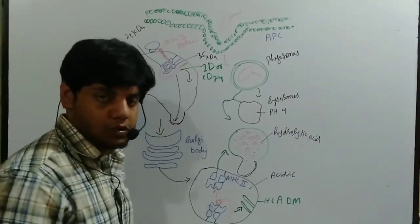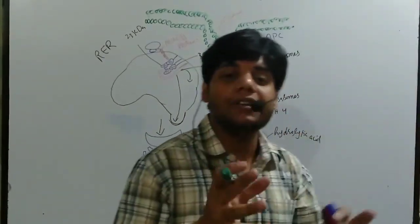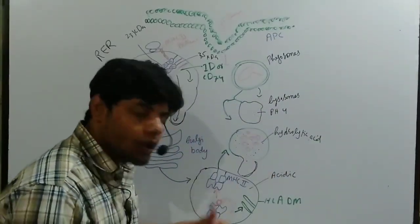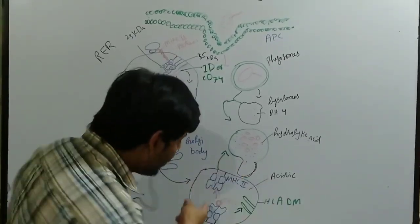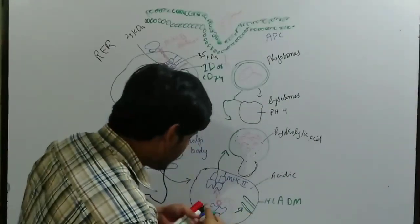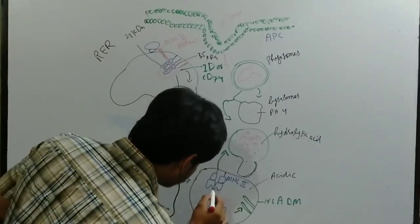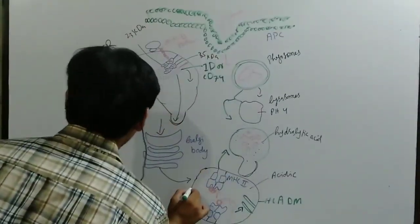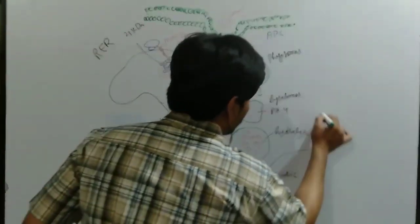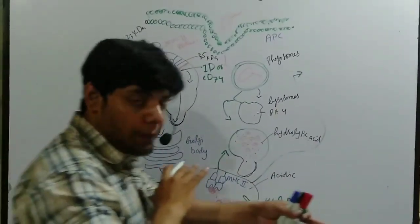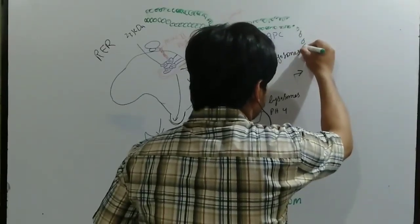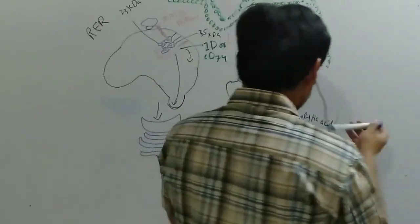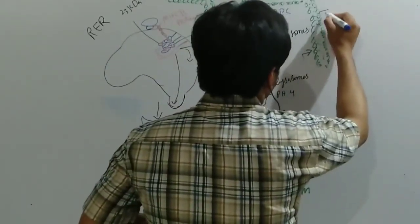This free complete MHC2 molecule will then fuse with the phagolysosome. Once it is fused with the phagolysosome, the antigen — the fragments of the bacteria present inside the phagolysosome — are shifted, and the specific antigen binds to this MHC2 molecule. We then get a specific MHC2-antigen complex. After that, this complex will fuse with the cell membrane.